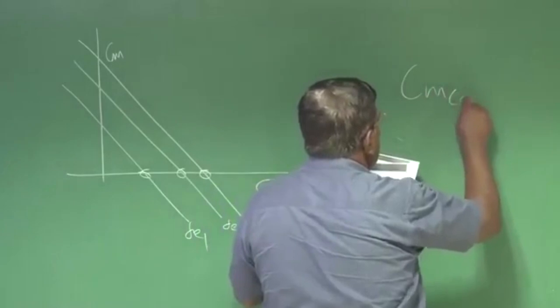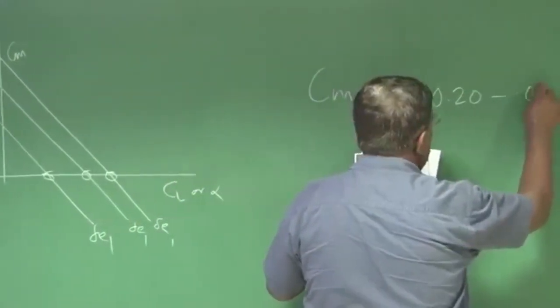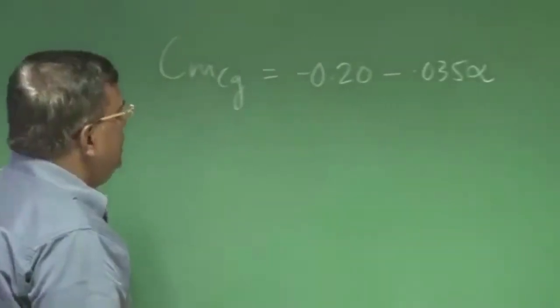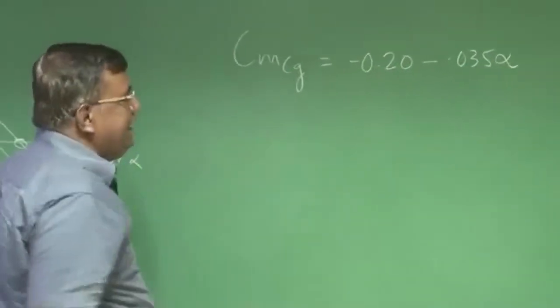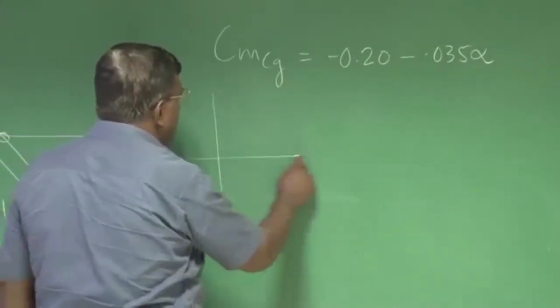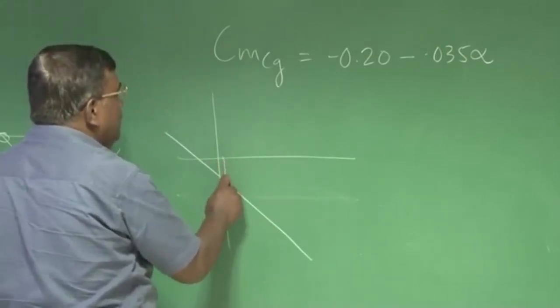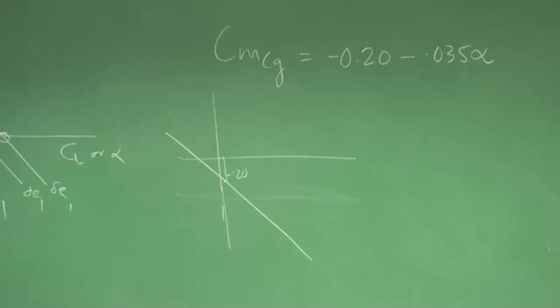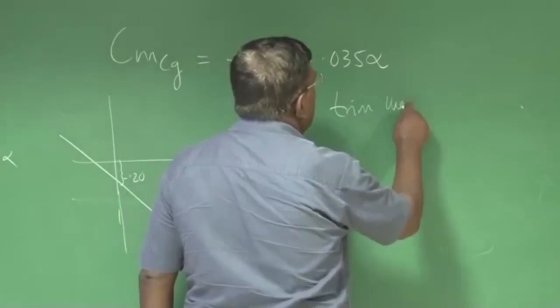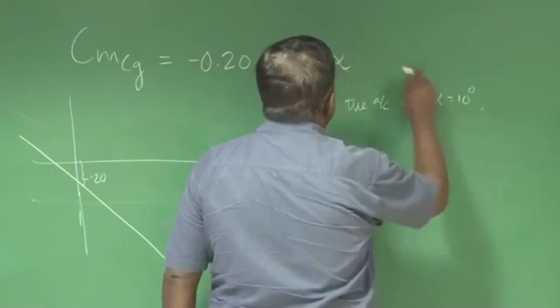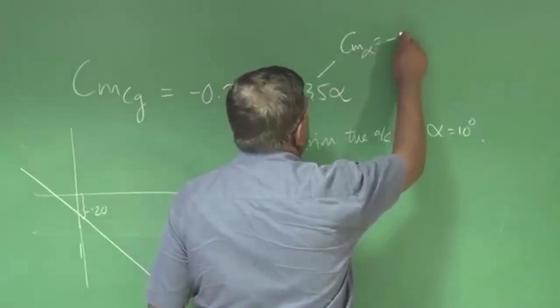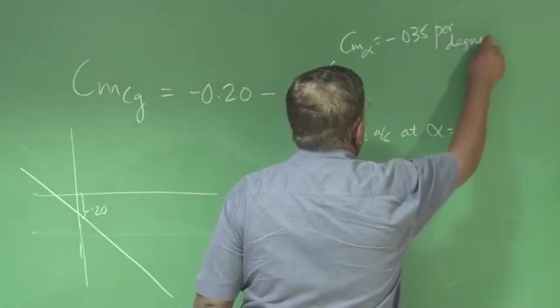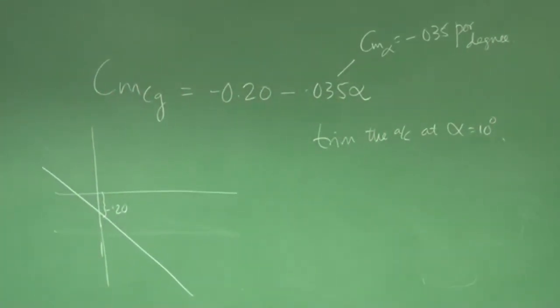Let us say I have an airplane for which CM about CG is minus 0.20 minus 0.035 alpha. Let us see, we have an aircraft which has a wing-fuselage combination and CM_CG we are getting like this. That is, if I plot CM versus alpha this will look like somewhere here, something like this and this value will be minus 0.20. And during landing you want to trim the aircraft at alpha equal to 10 degrees. This is CM_alpha which is minus 0.035 per degree.